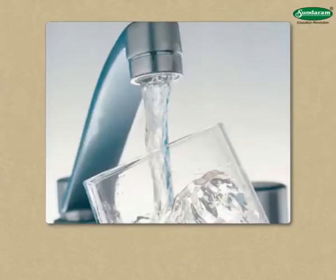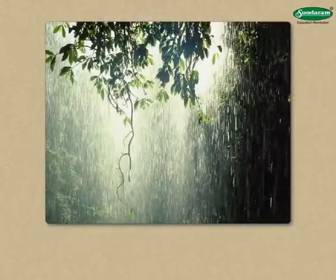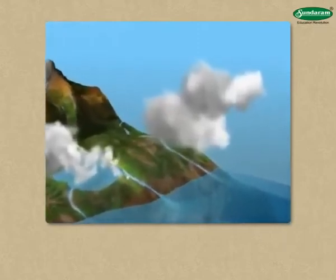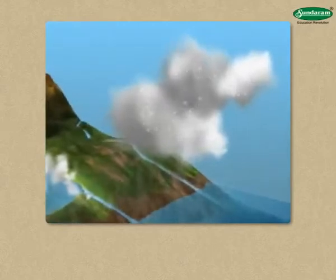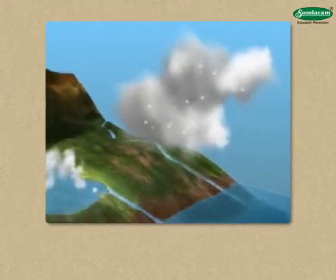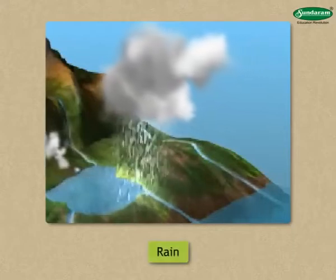Water is an essential factor for the existence of life. We get water mainly in the form of rain. As the air rises, its temperature decreases and the vapour contained in it gets condensed. The water droplets formed in this process come together and their size increases. These large water droplets cannot float in the air and fall or precipitate to the ground. This is called rain.